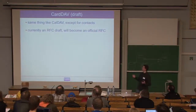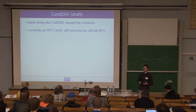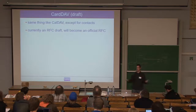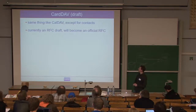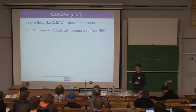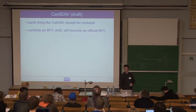CardDAV is basically the same as CalDAV but for contacts. Contacts are stored in vCards. There's also a multi-get report. It's currently still in development — Cyrus Daboo wrote the draft — and I expect it will be standardized during 2009, probably around July.